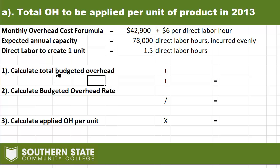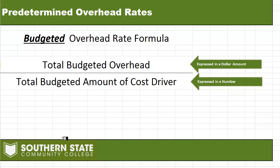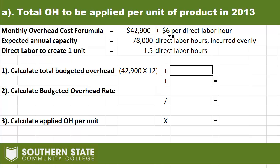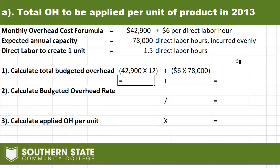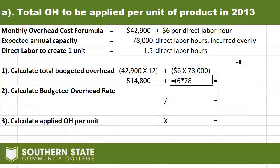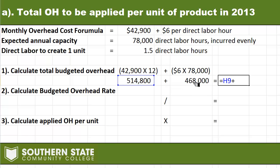I'm going to start by calculating total budgeted overhead — the first part of our formula. Since $42,900 is a monthly amount, I need to multiply it by 12. Then I also need to consider the variable portion: $6 per direct labor hour multiplied by the expected annual capacity of 78,000 hours. I add those two items together. So: $42,900 × 12, plus $6 × 78,000, which gives us a total overhead amount.